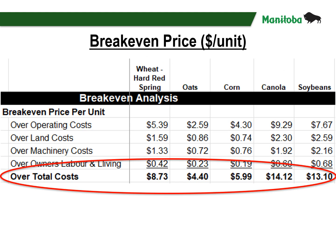On this slide we can see the breakeven prices. For the five crops shown, breakeven price is determined by dividing costs over expected yield. Breakeven prices can be very useful — they help with identifying market opportunities and also identify the likelihood of profitability when we compare our breakeven price to current market prices. Hard red spring wheat's breakeven price is $8.73 per bushel, oats is $4.40 per bushel, corn is almost $6 per bushel, canola's breakeven price is $14.12 per bushel, and soybeans is $13.10 per bushel.